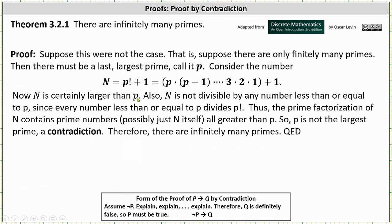So n is certainly larger than p. If we look at the expansion of p factorial, notice p times p minus one is going to be larger than p, and therefore n will be larger than p. Also, n is not divisible by any number less than or equal to p, since every number less than or equal to p divides p factorial. So if every number less than or equal to p divides p factorial, it's not going to divide p factorial plus one, meaning it won't divide n.